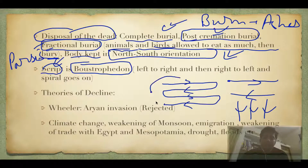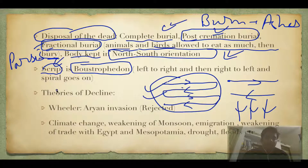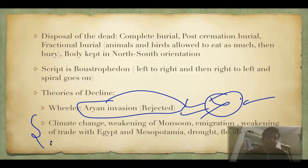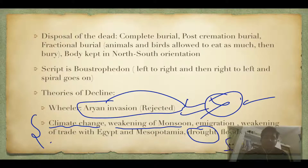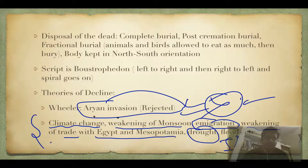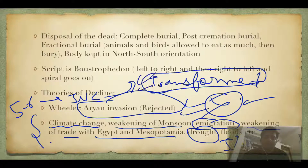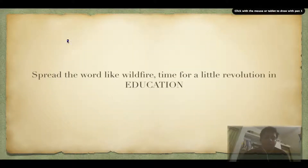Finally, the theories of decline: the Aryan invasion theory was completely rejected — please do not cite this theory. The major factors were climate change, weakening of monsoon causing drought, changes in the course of the Indus River causing floods, emigration to better regions, and weakening of trade with Egypt and Mesopotamia. These five to six combined reasons caused the decline. Importantly, decline does not mean complete vanishing — it transformed. Urban life in India never vanished; it just transformed.